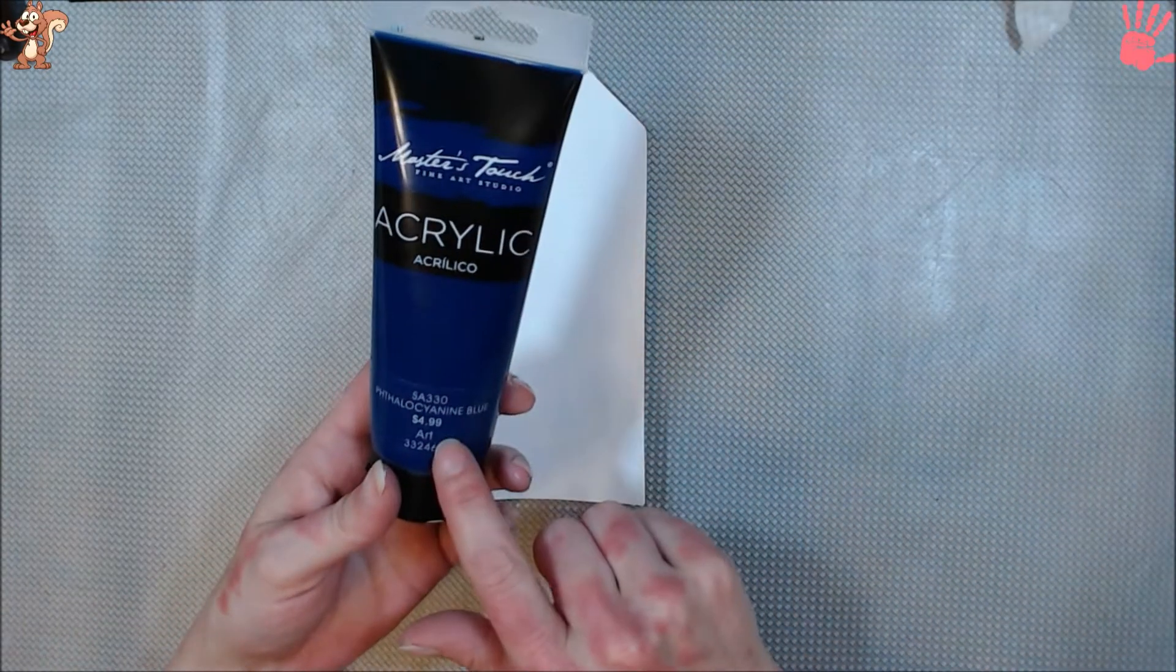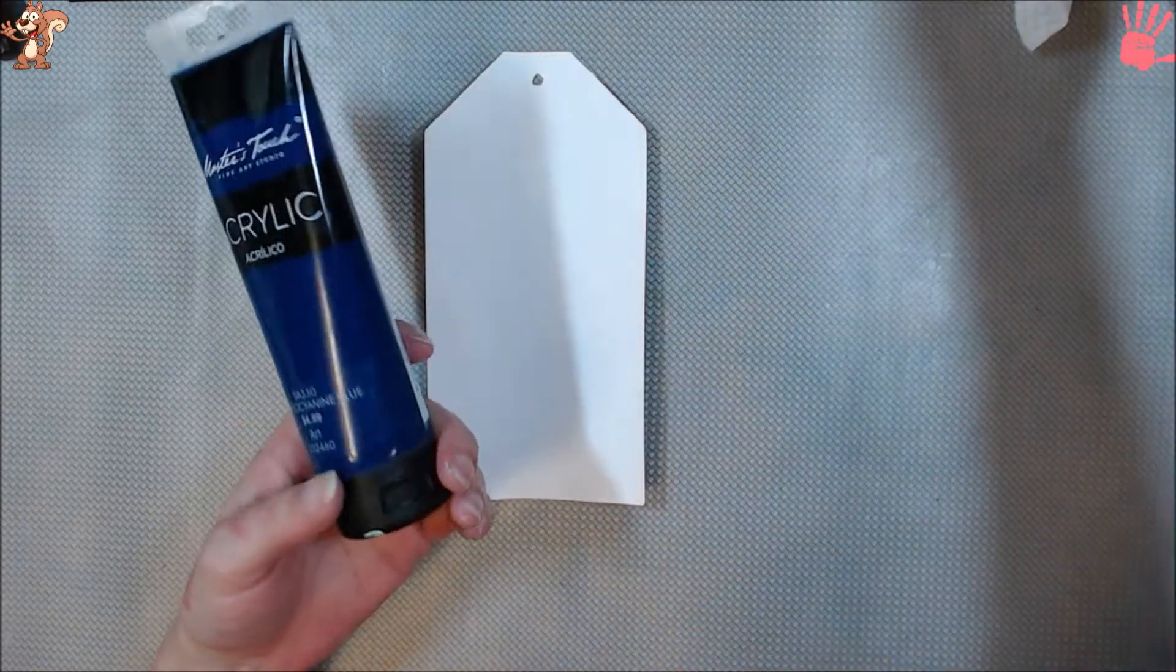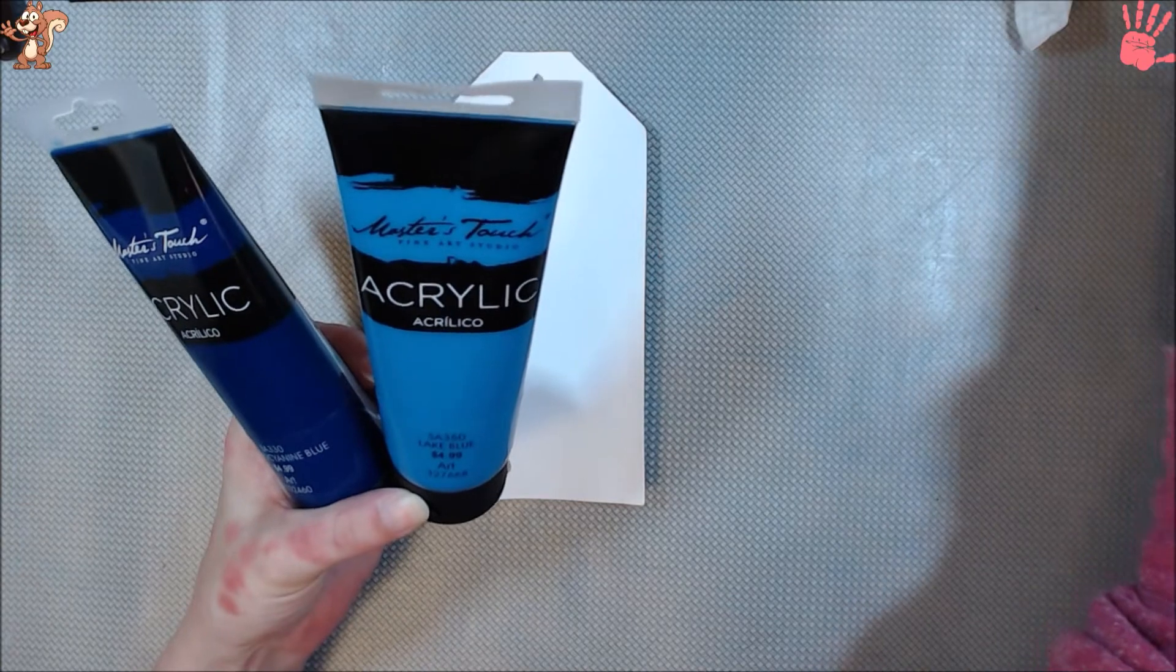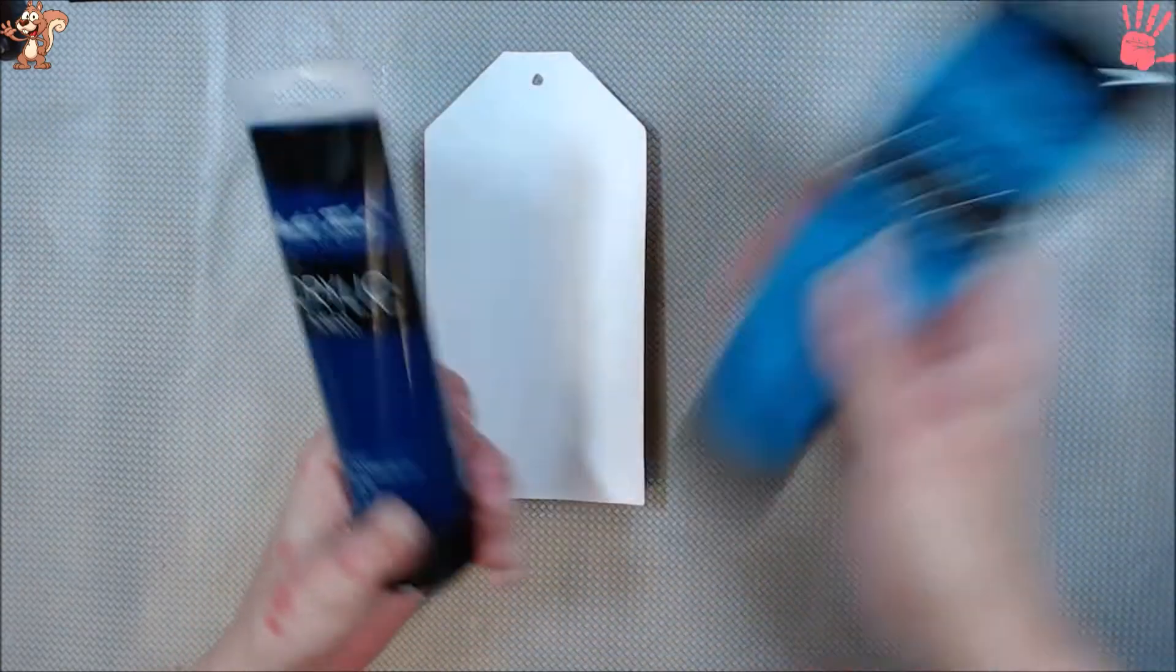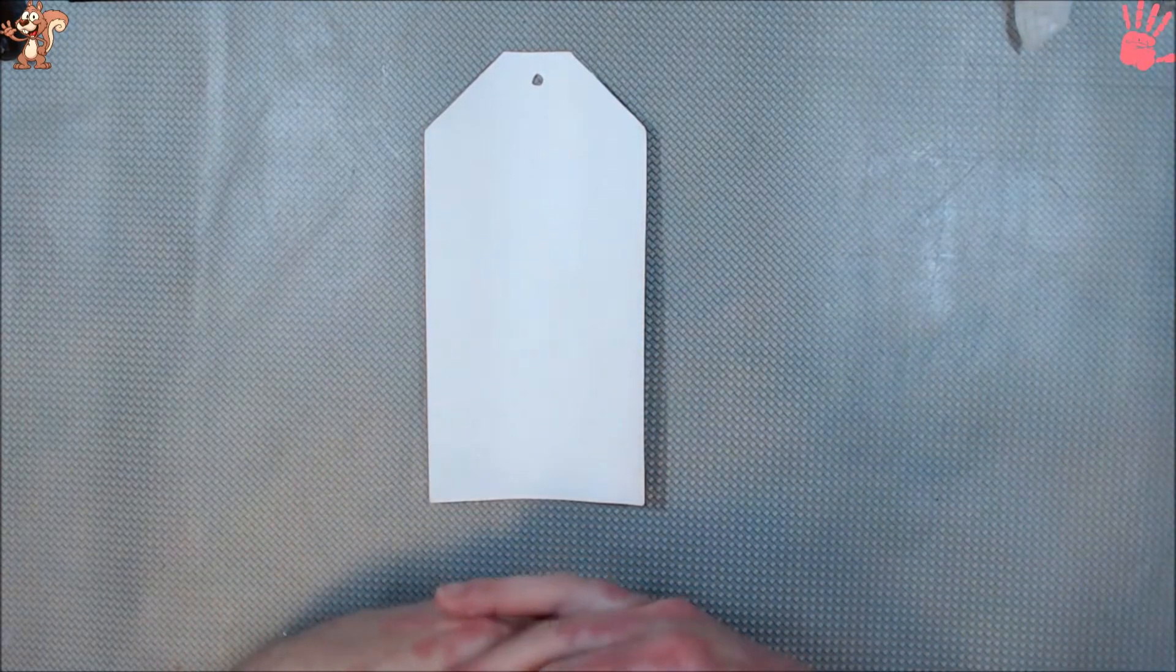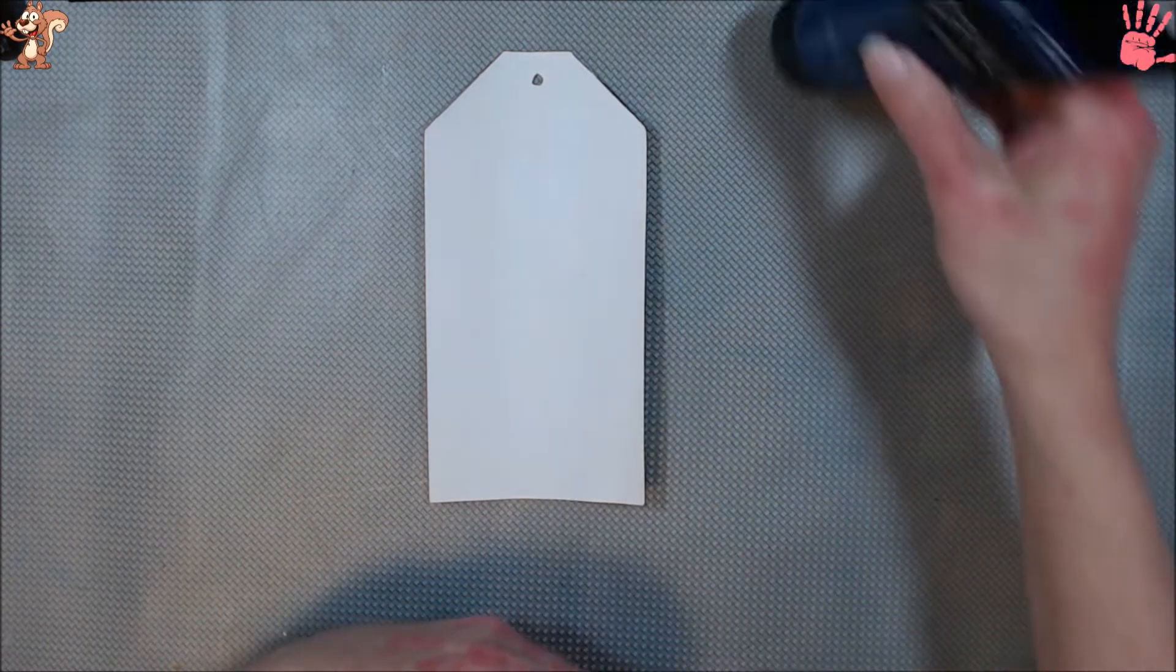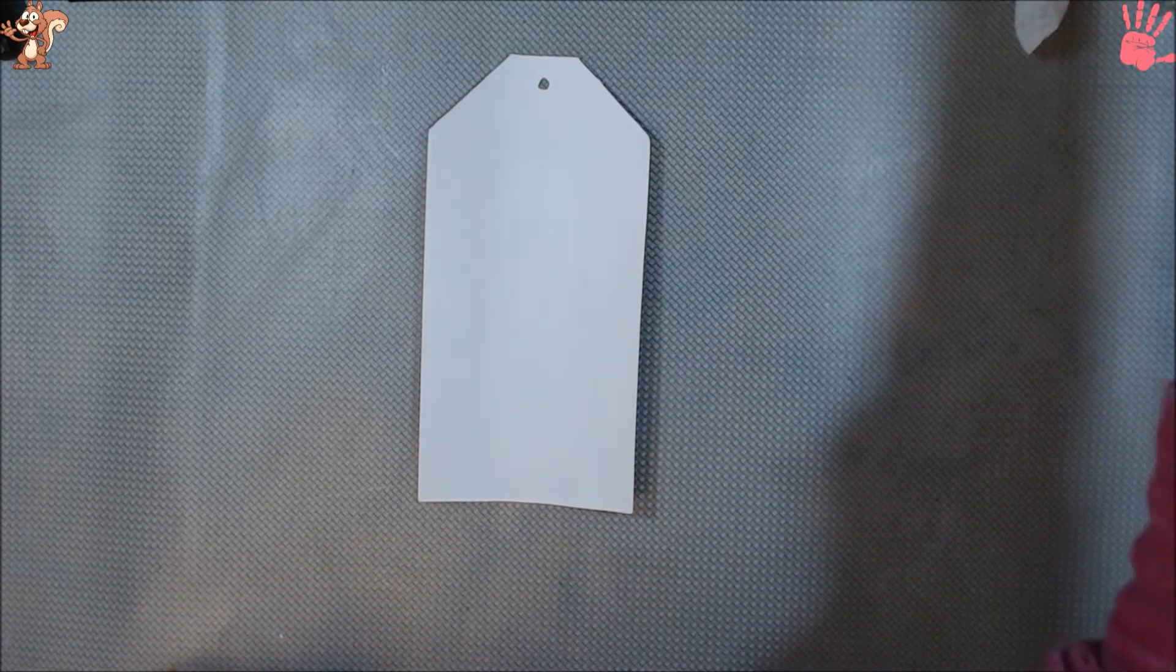And I have my 3 shades of blue. I have this Phthalo Cyan Blue or Cyan Blue, whatever. And we have light, and this one's called Lake Blue, and this one is Pale Blue. I may mix it with some gesso to lighten it a little bit, maybe. Because this one's very pigmented. I don't know. I'm still trying to figure out what I'm going to do.